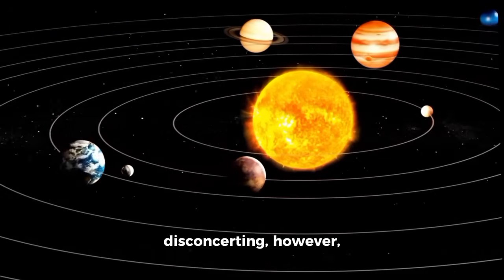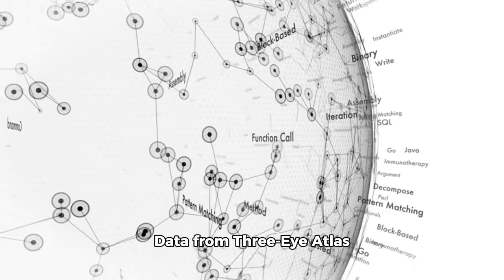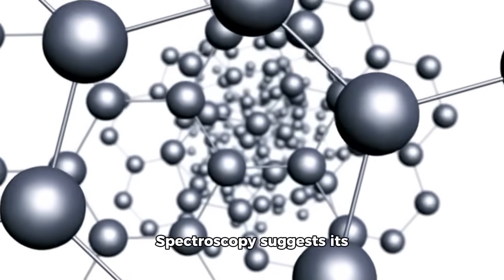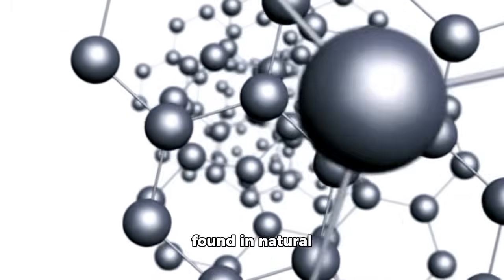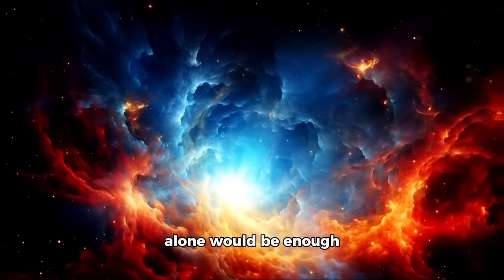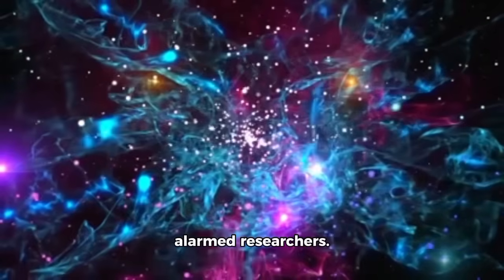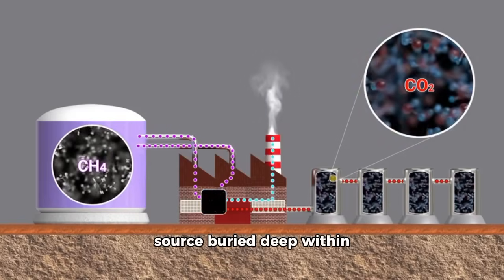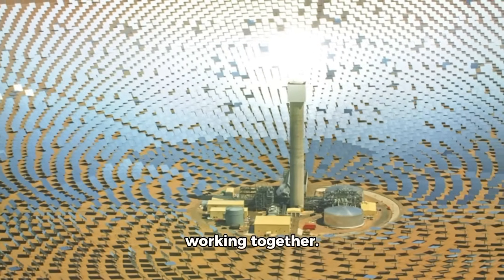What is most disconcerting, however, are the characteristics these items appear to possess. Data from 3E Atlas has already shaken the scientific community. Spectroscopy suggests its composition is dominated by pure nickel without the iron content normally found in natural meteoritic material. This peculiar makeup alone would be enough to spark debate. But it is the energy readings that have truly alarmed researchers. Instruments have recorded emissions in line with a sustained 10 gigawatt power source buried deep within the object, equivalent to 50 nuclear power plants working together.